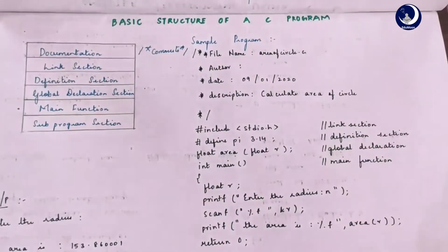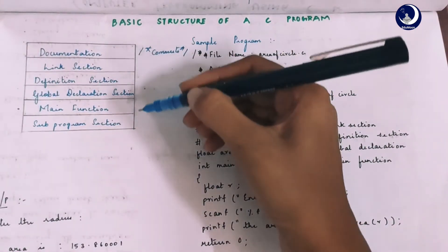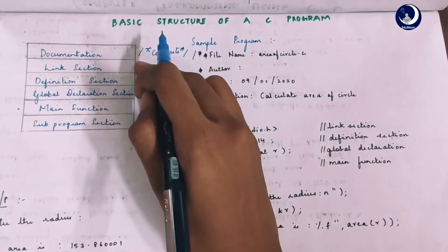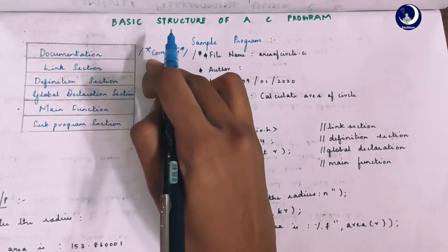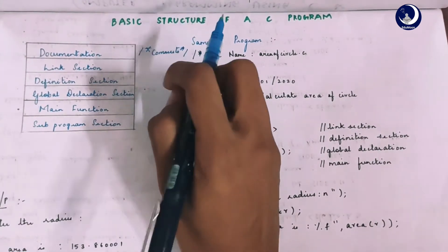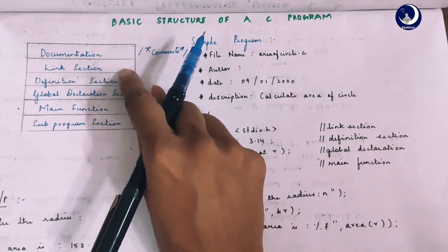The first topic of the lecture is the basic structure of a C program. Every code has more or less the same structure. The first section is the documentation section. This section is used for giving comments on the program. The second section is the links section. Links section is used to make reference to the header file.